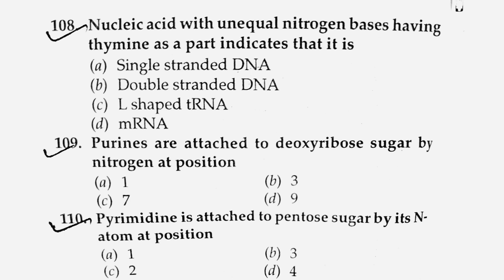Next question: A nitrogen base is attached to deoxyribose sugar at which position — position 1, position 3, position 7, or position 9? Understanding the ring-type structure of DNA and RNA, the sugar diagram, and where the nitrogen base and hydroxyl group attach is important. The answer is position 9 — option number D.